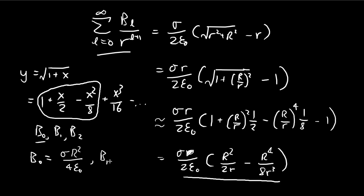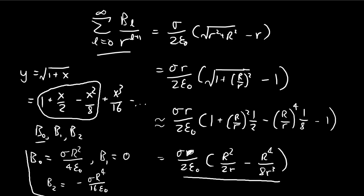For B₁, the denominator would be r², but there is no r² term in our expansion, so B₁ must equal zero. For B₂, the denominator is r³, and comparing the constants we get B₂ equal to negative R⁴/(16ε₀) — with factors of 8 and 2 giving 16ε₀. These are our first three terms.